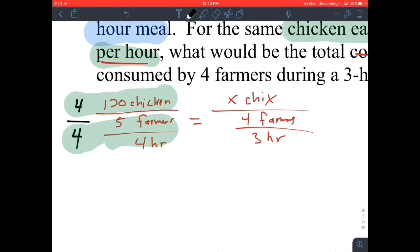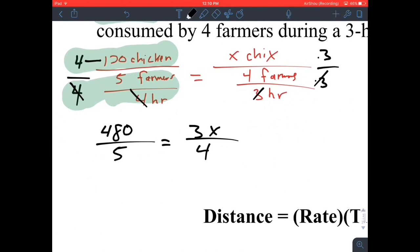Down on the bottom, four divided by four cancels. On the top, four times 120, that's going to be 480, so that's 480 over five. If I do a similar thing over here, multiply the top and bottom by three, I'm going to get 3x over four because those threes will cancel.